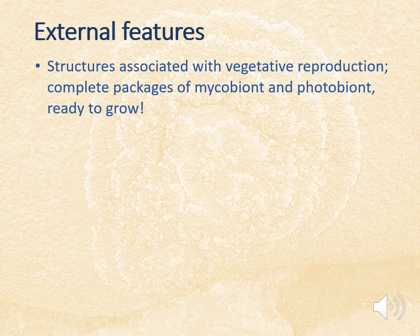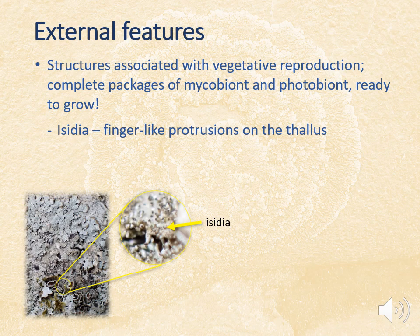Other external features are structures associated with vegetative reproduction. These are structures made up of both mycobiont and photobiont, broken off by mechanical action — for example by animals brushing against them, splashing droplets of water, or by the wind. Because they are complete little packages of everything needed to grow a thallus, they can grow into a new lichen if conditions are suitable. Structures associated with vegetative reproduction include isidia, which are finger-like protrusions on the thallus. When you look up close through the hand lens, you can see little tiny fingers like little coralline structures.